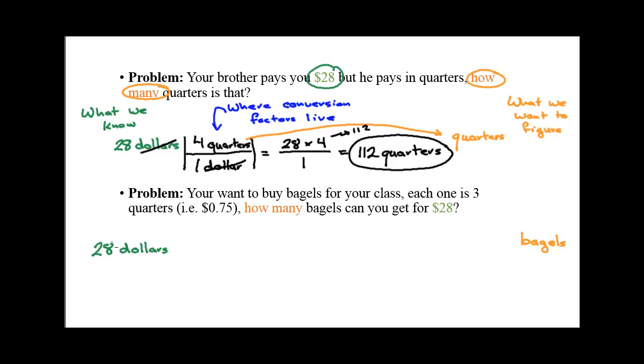We can apply dimensional analysis. So, I'm going to build a field goal to change the units of dollars into something else. I know that four quarters equals one dollar. And I've decided to put dollars on the bottom so that I can cancel, leaving me in the unit quarters.